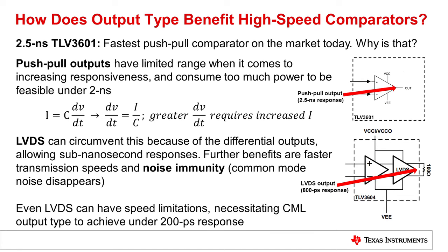Output type is an important consideration in high-speed design, and while it can have a big impact on your application, it primarily affects speed. With our recent release of TLV3601, TI now has the fastest push-pull comparator on the market, and the reason is that it is nearly impossible to go any faster with push-pull technology. The basic equation here explains how faster response times require significantly more power consumption, making it impractical to continue using push-pull. So to go any faster than two nanoseconds or so, customer design has to incorporate LVDS outputs. And even LVDS eventually has its limitations, necessitating moving to something faster like CML.